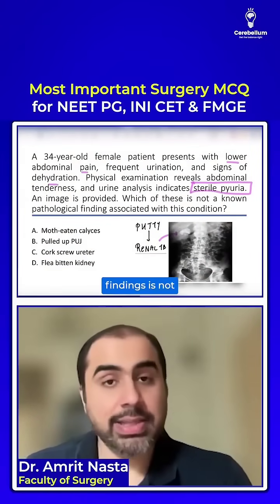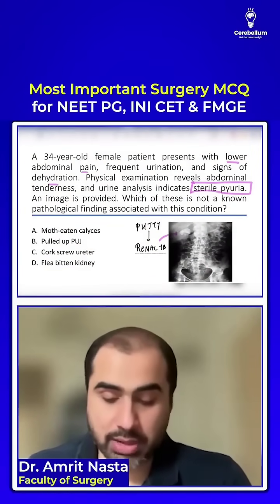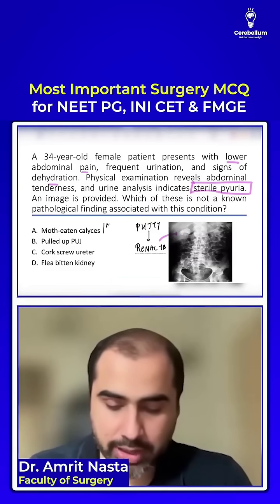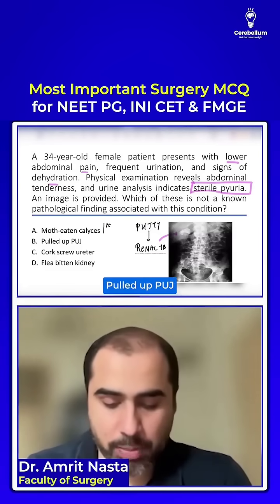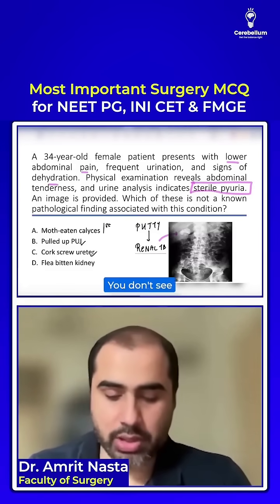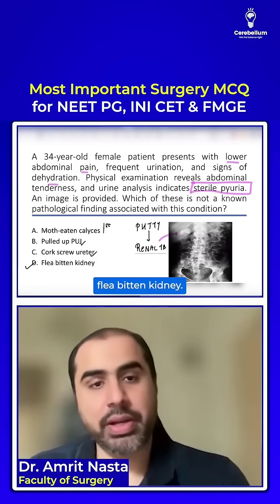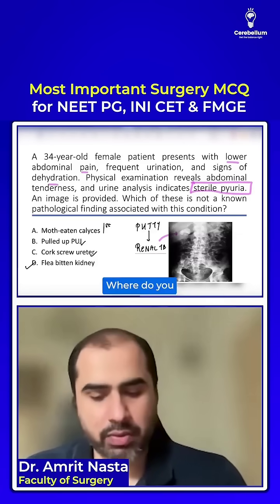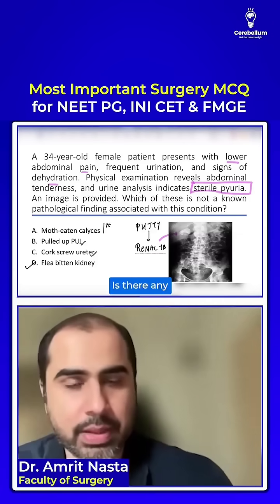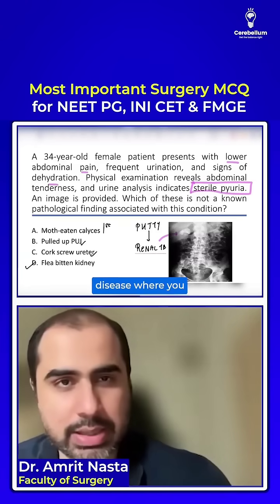Which of the findings is NOT going to be seen? Moth-eaten calyces is the first finding seen in renal TB. Pulled-up papilla is seen, corkscrew ureter is seen — but you do NOT see flea-bitten kidney in renal TB.